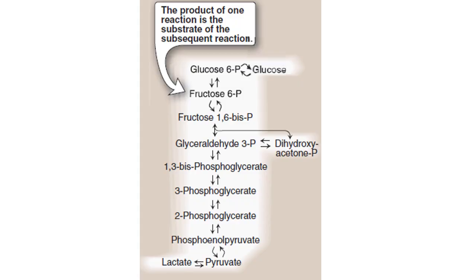Glycolysis takes place inside the cytosol and involves 10 different reactions. Glucose converts to pyruvate aerobically, whereas glucose converts to lactate anaerobically. The circular reversing arrows in the figure indicate which reactions are irreversible — the first reaction, the third reaction, and the last reaction — and these require different enzymes to carry out the reverse reactions.